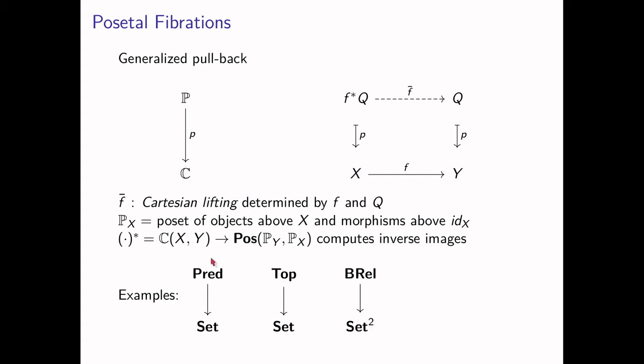Some examples of fibrations: we can look at the fibration from the category of predicates to the category of sets, where the fibration maps a predicate to its base set; or the forgetful functor from topological spaces to sets; and also the forgetful functor from the category of binary relations to sets-squared.